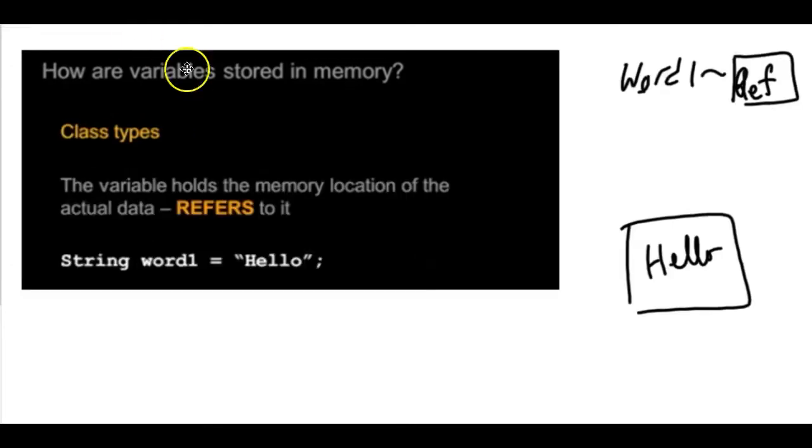And in that memory location is the number 17. A class data type doesn't do that. A class data type stores just the memory location, the reference. So, for example, the word one is storing the reference to the string literal hello somewhere in memory.